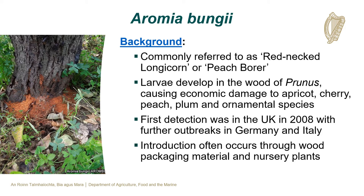Aromia bungii is commonly referred to as the red-necked longicorn or peach borer. The larvae of Aromia bungii develop in the wood of Prunus species, causing economic damage to apricot, cherry, peach, plum and ornamental species. Aromia bungii was first detected in the UK in 2008 with further outbreaks in Germany and Italy. It is often introduced through wood packaging material and the trade of nursery plants.